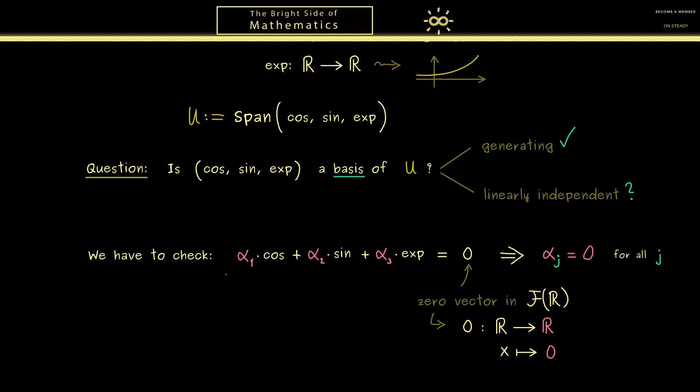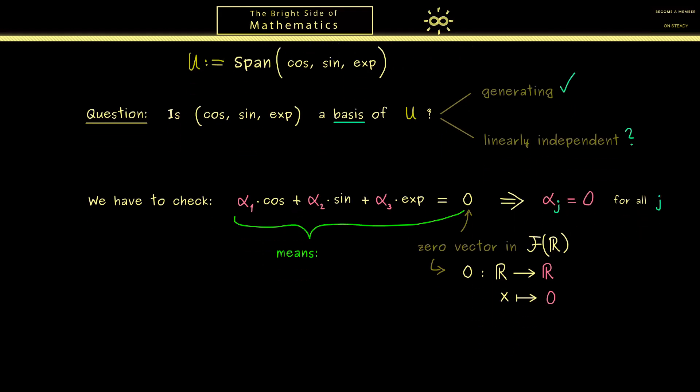And for this reason, we can rewrite this equation here on the left hand side. Simply because an equation of functions means that both sides coincide for all points x from the domain. In other words, we just have a lot of ordinary equations here.